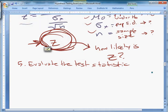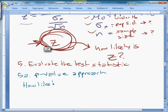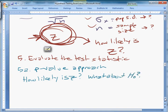Let's start here. 5A is a p-value approach. The p-value approach is my preferred approach, the one I'm more likely to ask you to use. What this answers is, how likely is z, exactly? So how likely is z, and then what about the null hypothesis? And that's what the p-value approach tries to answer.